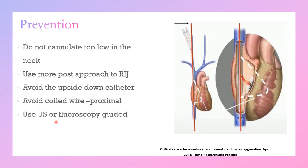Here are some tips to prevent complications during insertion of the dual-lumen cannula. Do not cannulate too low in the neck, as the angle will be too sharp for large cannulas. Use a more posterior approach to the right internal jugular vein. Avoid an upside-down catheter orientation. We can use flow directed toward the right atrial wall to confirm the direction of insertion. Avoid coiling of the wire proximally. During insertion, we can use fluoroscopy, transesophageal echo, or ultrasound to confirm the wire is inside the inferior vena cava.